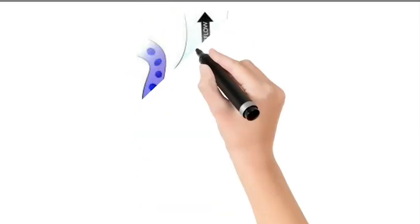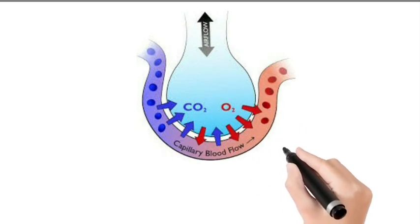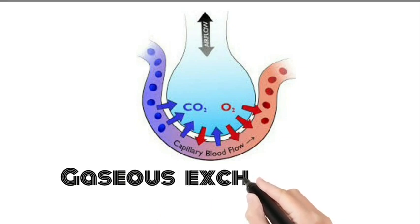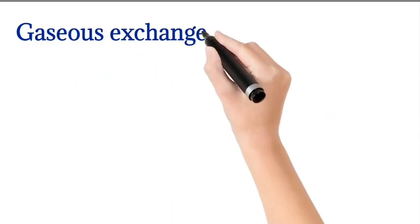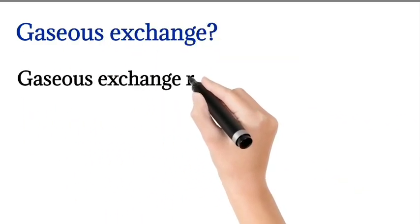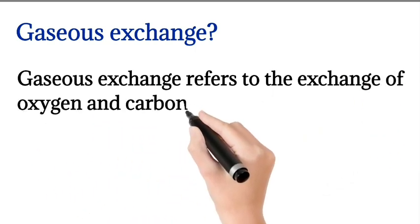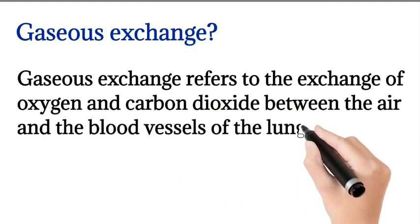Hello, welcome to our science lesson today. In our science lesson we are going to look at gaseous exchange in humans. Let's start with what is meant by gaseous exchange. Gaseous exchange refers to the exchange of oxygen and carbon dioxide between the air and the blood vessels of the lungs.